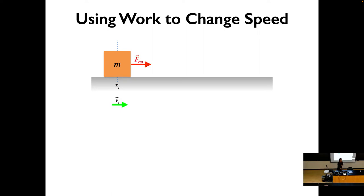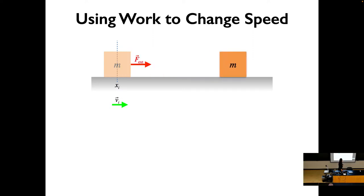Let's call the initial speed v-initial. We have an external force — that's the force outside of the system. What is our system in this case? Probably just the block. Something outside of the block is pushing the block, and it's not the floor. So that's the external force. Then at some later time, this thing speeds up and you're in a new position — that's your displacement — and then you have a bigger speed because you've been applying this constant external force, which means there's an acceleration.